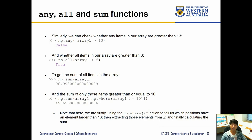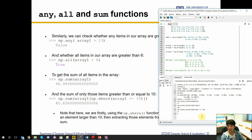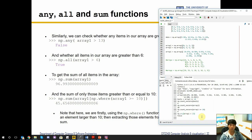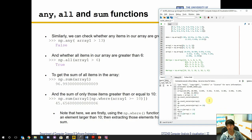We can do similar things with np.any and np.all. For example, np.any(array1 > 13) returns false because no values exceed 13, but np.any(array1 > 10) returns true because we have four occurrences. You can pass conditions directly into these functions.